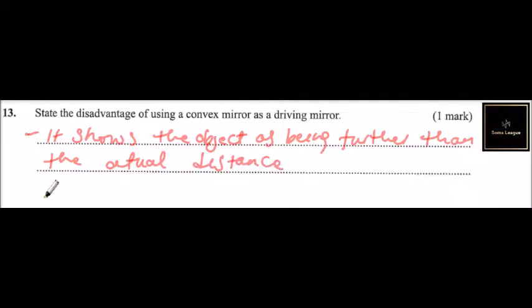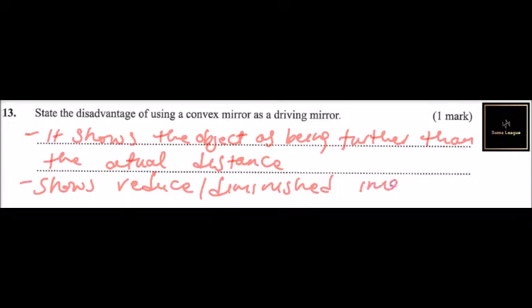Therefore, a driver may not be able to get the exact point where the vehicle behind is. It also shows reduced or diminished images - that is the way we describe the image. The image that you are looking at behind is smaller than the actual size.